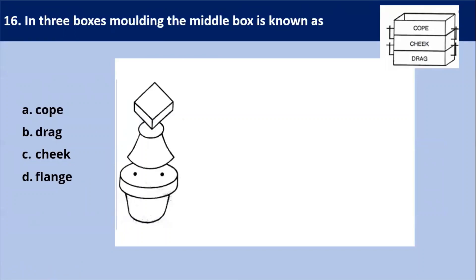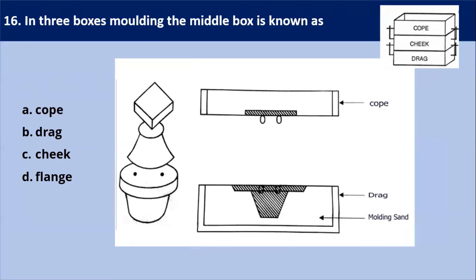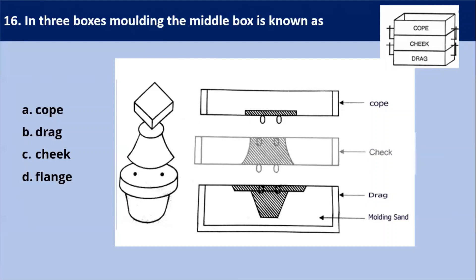Next question: in three-box molding the middle box is known as — when the pattern is of flange type, it is not possible to produce in two-box molding. In such cases, the topmost box is called the cope, the lowermost is the drag, and the middle box, as shown in this diagram, is called the cheek. Our answer is C — cheek.